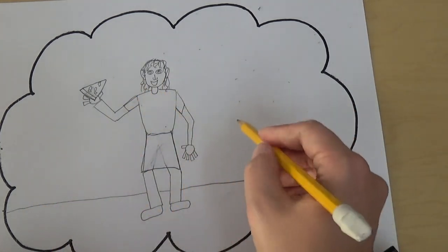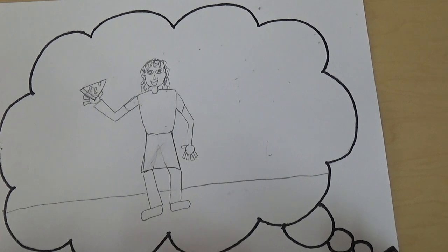And then you can add other details around it. Maybe I could draw a table. Or chairs. Or something like that.